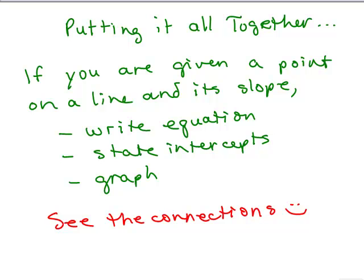In this video, we're going to put it all together. If you're given a point on a line and its slope, we're going to write the equation. You should be able to do that in both standard and slope-intercept form using any of the methods we've gone over. Be able to state the x and y intercepts, be able to graph it, be able to check that the equations of the line are correct, as well as the graph.